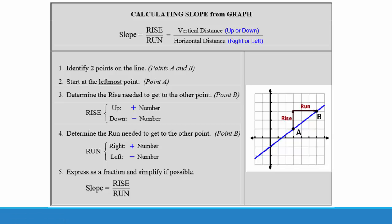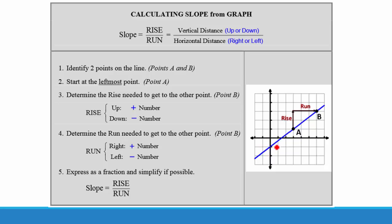The first thing we are going to do is identify two points on the line. You can see on the graph we have point A and point B. We could pick any two points, but we want to pick points that fall on the crosshairs of the graph — points that will have integer coordinates. We wouldn't want to pick a point that does not have integers as its x and y values.